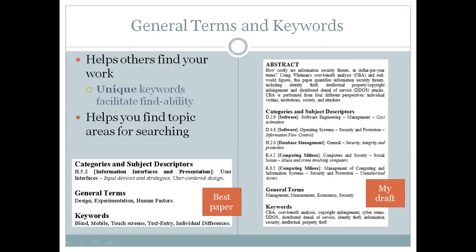General terms and keyword sections help others find your work. I don't know that they have any effect on getting your paper accepted, but once it's accepted, having more keywords and terms may make it more findable. You can see that in the abstract, two terms — DDoS and CVA — are enumerated in their full translation as well as abbreviated as acronyms, so they can be found either way in a query.